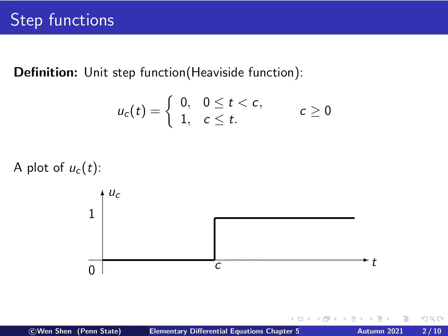We can plot this function to see clearly why it's called unit step. For t less than c, the function is zero, and at c it jumps up one unit, and then after that it's one. So it looks like a ladder — you take one step higher with unit height one.